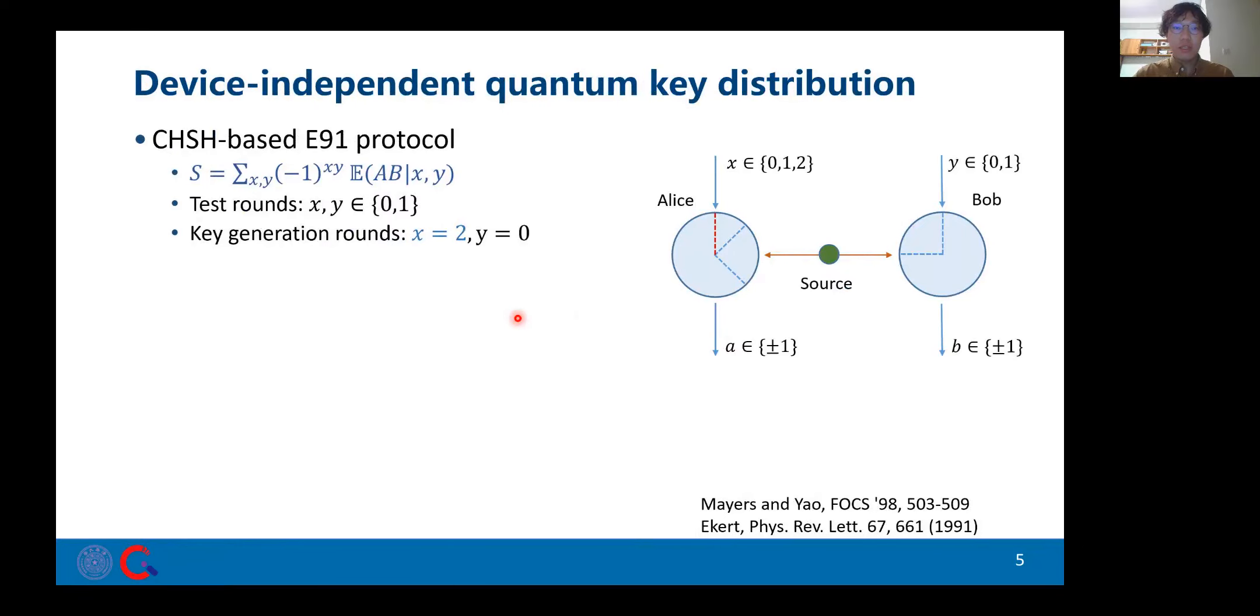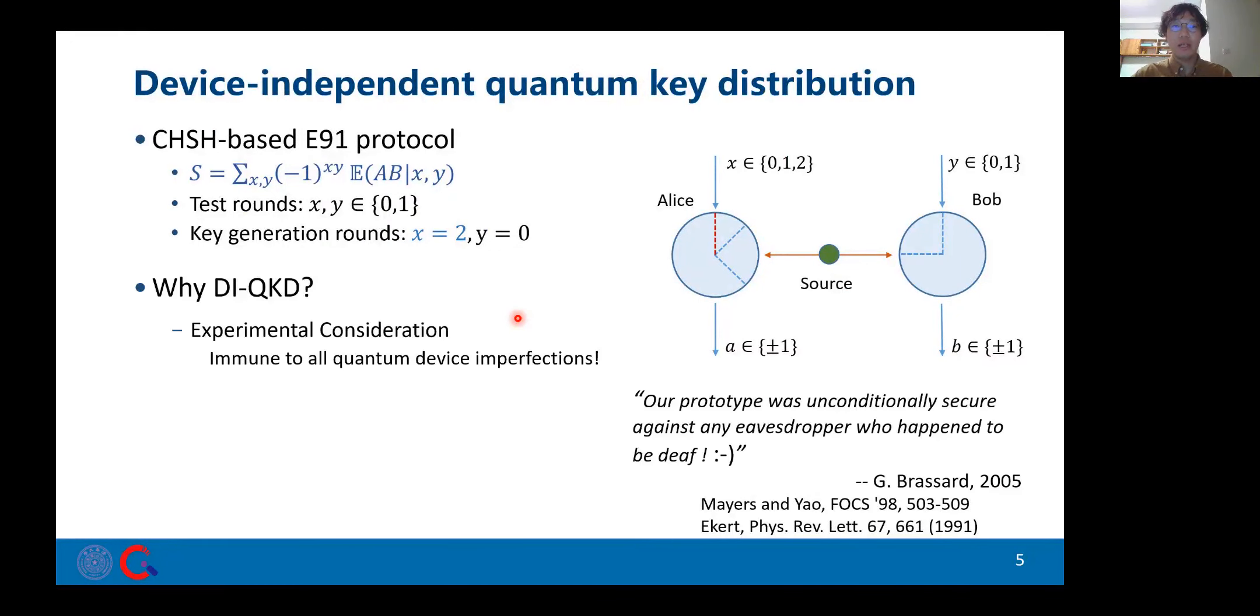Such a device-independent feature brings good news for cryptography like key distribution. For example, in the CHSH-based ACAD-91 protocol, users randomly apply Bell tests to test devices and key generation environments. Why do we like DIQKD? Experimentally, device independence provides us with a tool to bypass the endless device characterization. Well, theoretically, this is a cryptographic task that assumes almost only the correctness of quantum theory. Now the question is, how to prove the security of DIQKD?